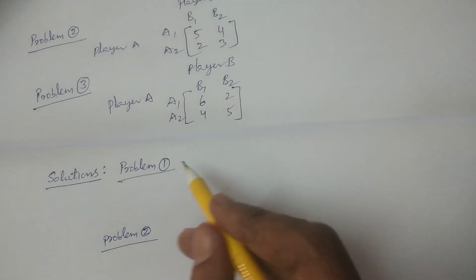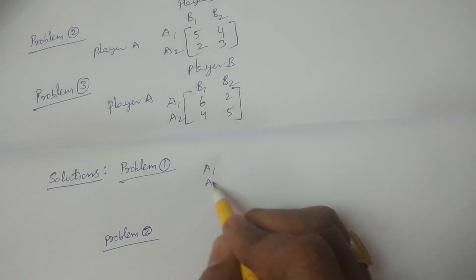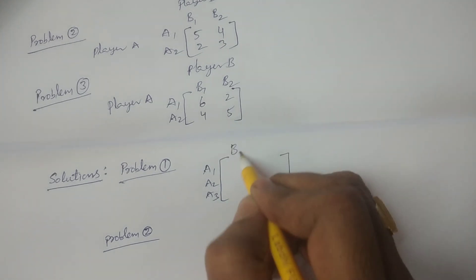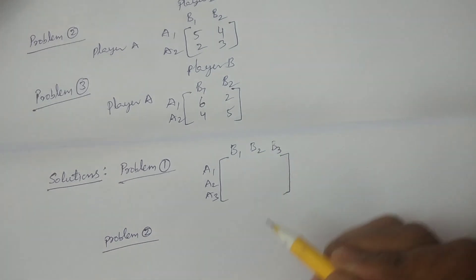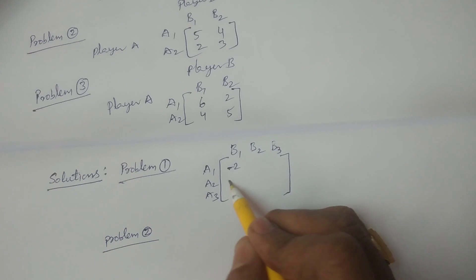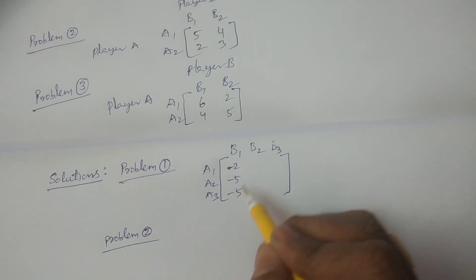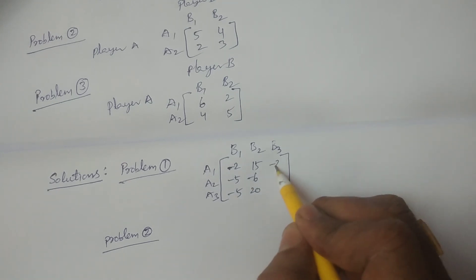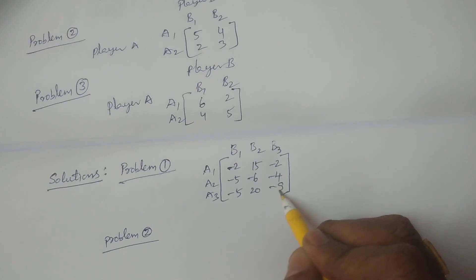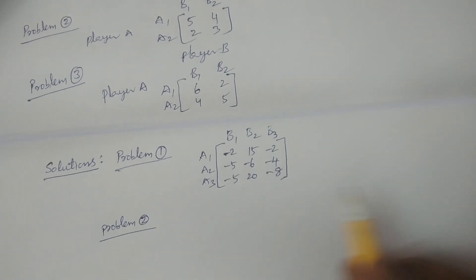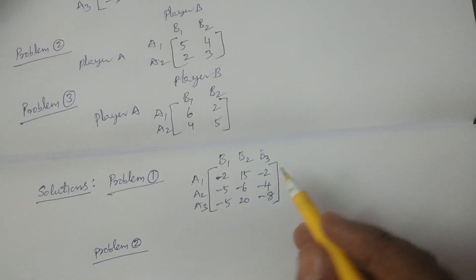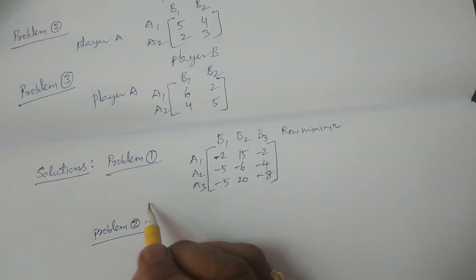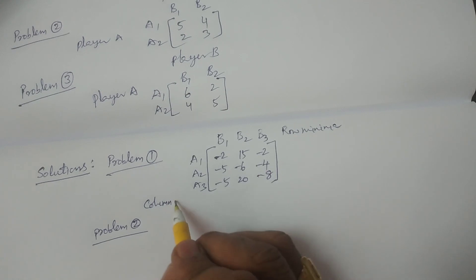Problem 1: player A is having three strategies, player B also three strategies. I write the payoff matrix for player A, and first of all we have to check whether the saddle point exists for a given problem. These are the strategies for player A and player B. You have to calculate row minima and column maxima.